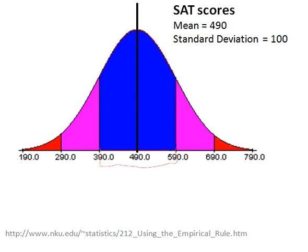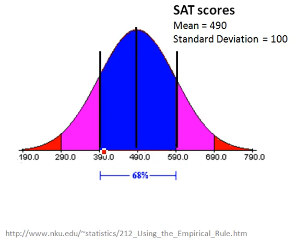Let's take a look at verbal SAT scores. We know that for verbal SAT scores, the mean is calculated to be at 490 — right there in the middle of the distribution. The standard deviation is 100, and the shape of the distribution is normal. Because of the empirical rule, we know that 68% of the scores will fall within one standard deviation. This applies any time you have a normal distribution — you'll get 68% of the population within that first standard deviation.